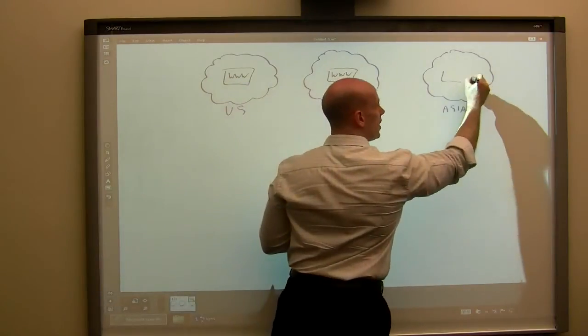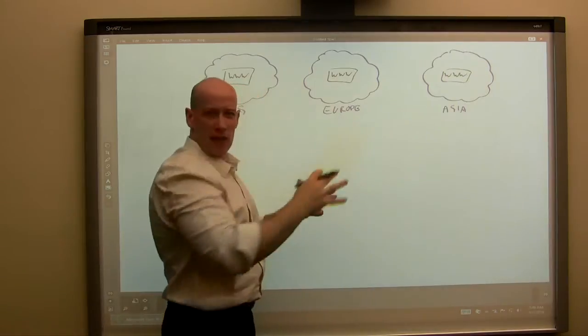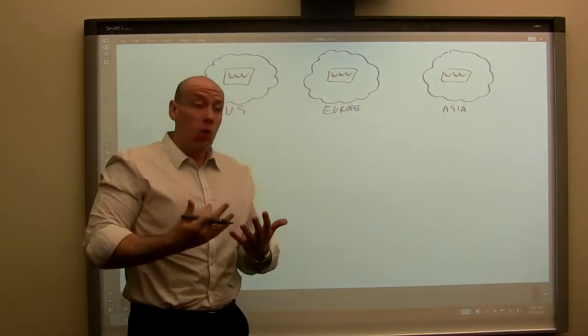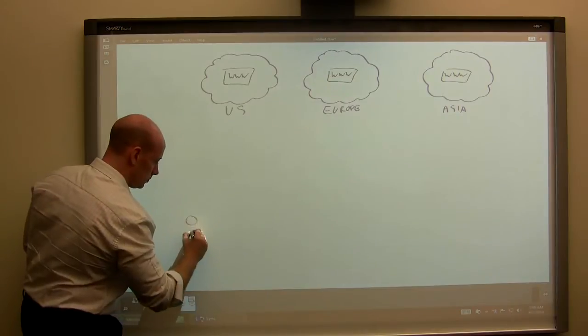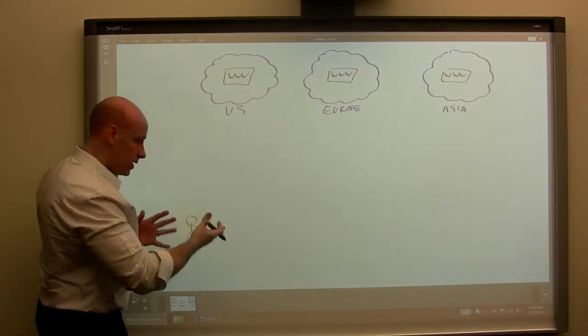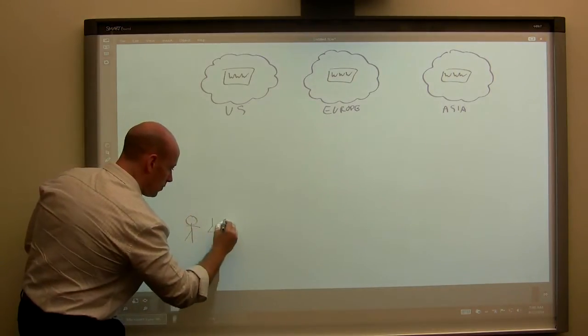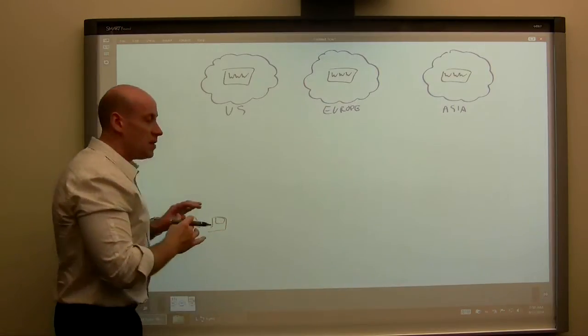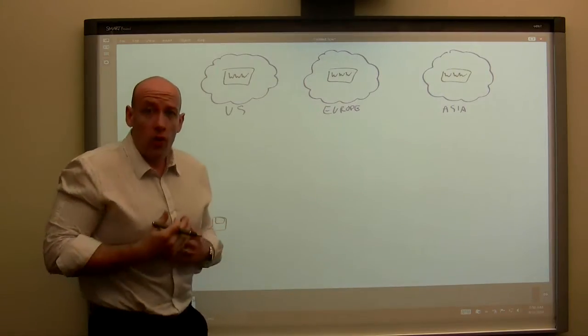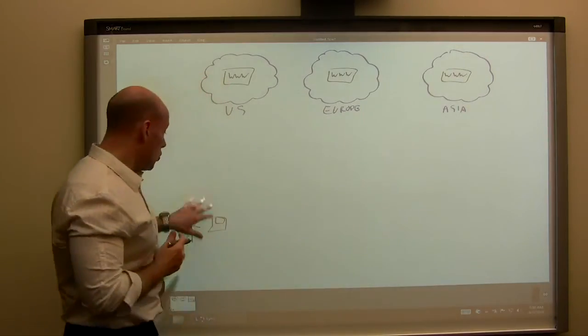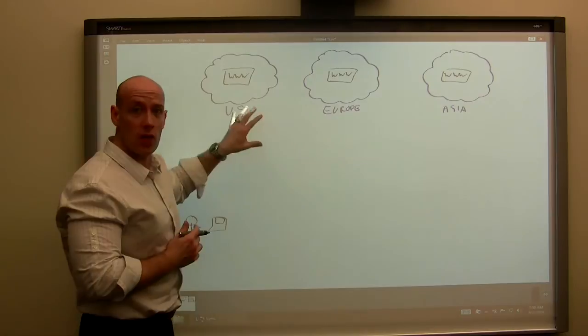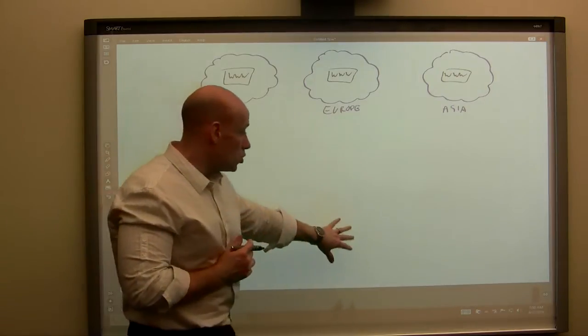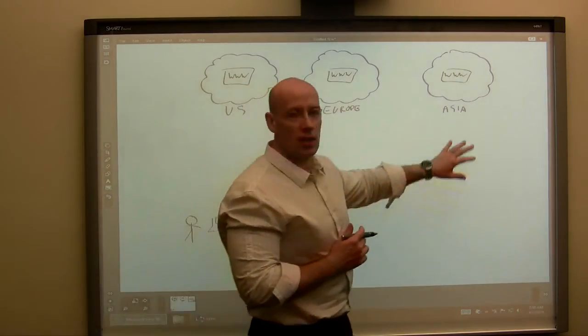I just have it geographically distributed, and my goal is that I have some user at their computer, and depending on where they are, I want them to use the one closest to them. So if I'm in the US, for example, I want to go to the instance of this web service hosted in the US. If I was in Europe, I want to use the one in Europe. Asia, Asia.